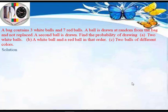In this question we said that there are three white balls. If we represent white balls as W and red balls as R, then we have three white balls and seven red balls. This means the sample space of that probability is 10, that is 3 plus 7. The sample space, denoted as S, is simply the total number of balls in the bag.